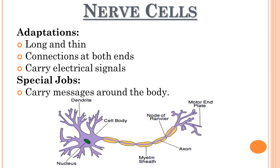Nerve cells are also called neurons and are the active part of the nervous system. These cells are up to 1 meter long and thin. Neurons communicate with each other as well as with other cells through electrical signals. One end is connected to the brain whereas the other end is attached to other parts of the body to send and receive messages. A nerve cell has other parts including the motor end plate, node of Ranvier, axon, myelin sheath, cell body, dendrite and nucleus.